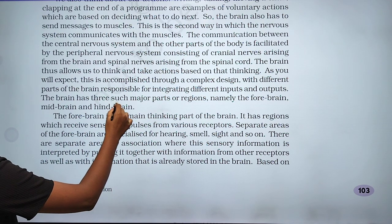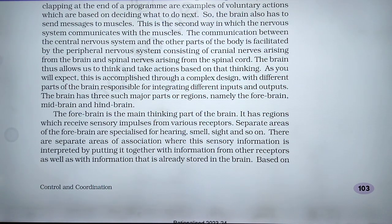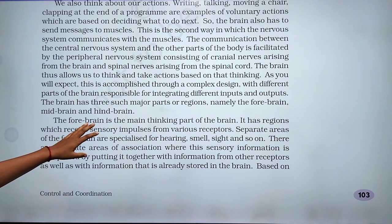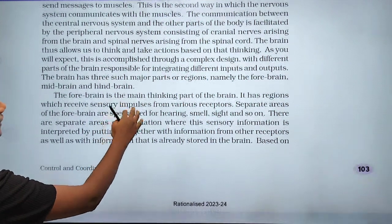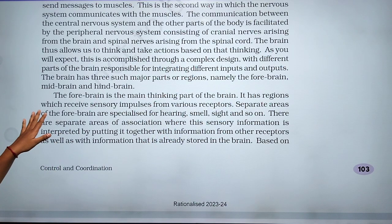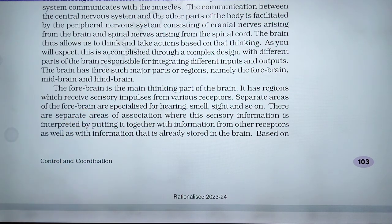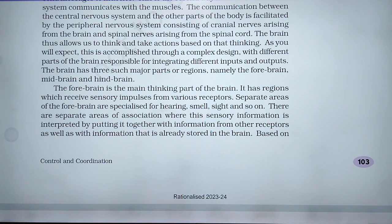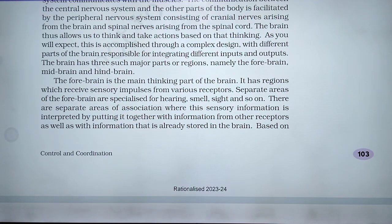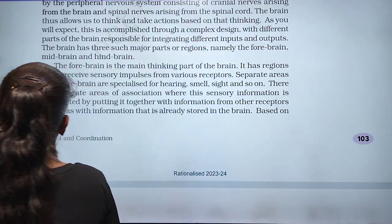The brain has three major parts or regions, namely the forebrain, midbrain, and hindbrain. The forebrain is the main thinking part of the brain, and it receives sensory impulses from various receptors.